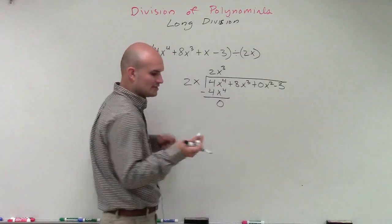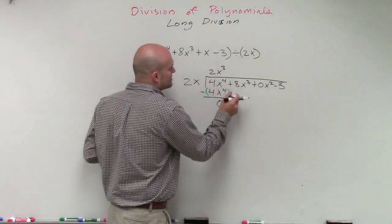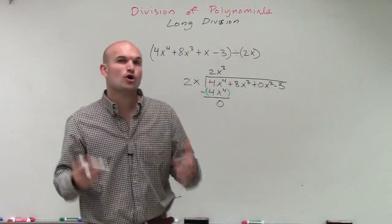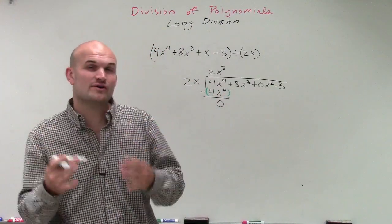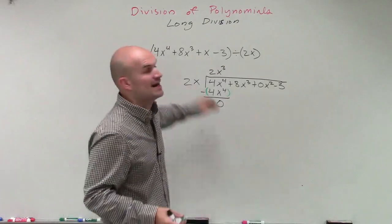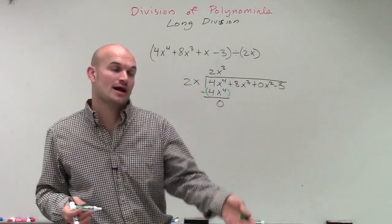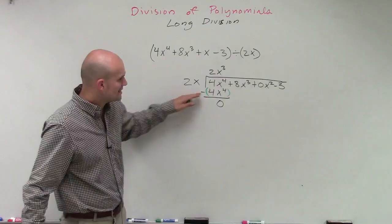So that goes ahead and becomes a 0. One important thing that I'm going to use a different color with is make sure when you're subtracting, you're subtracting the whole row. This is going to become very important once we start dividing by binomials and trinomials. So it's really important that we're subtracting the whole row.